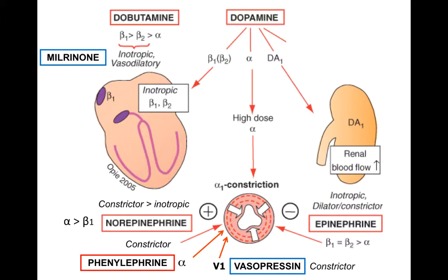Agents that affect vasoconstriction through alpha receptors include several we'll talk about, all with varying degrees of alpha receptor effects. These include norepinephrine, phenylephrine, and epinephrine. Dopamine also has some alpha activity but it's mixed with beta and dopamine effects. Finally, vasopressin acts to constrict blood vessels through a slightly different mechanism, by binding vasopressin or V1 receptors.